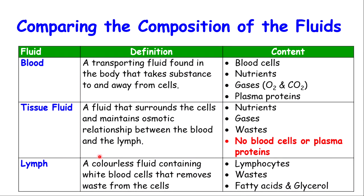Now pause here because this is important for everything coming up next. Take note of these three fluids associated with the lymphatic system, which are very important for its functioning: the blood, the tissue fluid, and the lymph itself. The blood is a transporting fluid found in the body that takes substances to and away from cells, defined here as it relates to the lymphatic system.